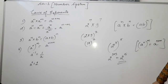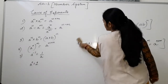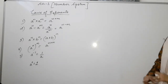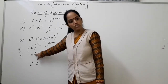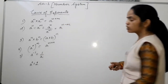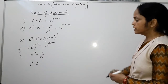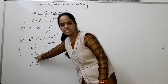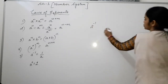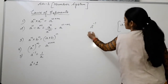Now the fifth law: a to the power minus 1. If any number is given and its power is negative, to make this power positive we have to do the reciprocal of the base number. For example, 2 to the power minus 1. We apply a to the power minus 1 equals 1 upon a. So our answer will be 1 upon 2.